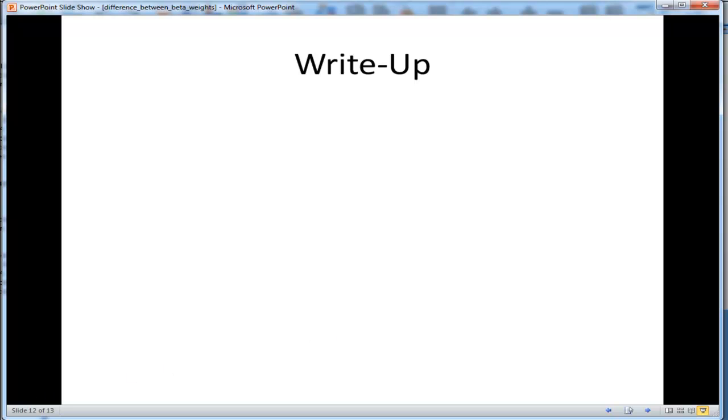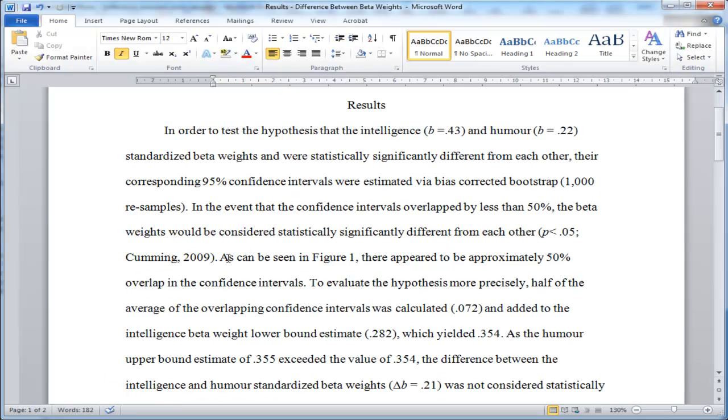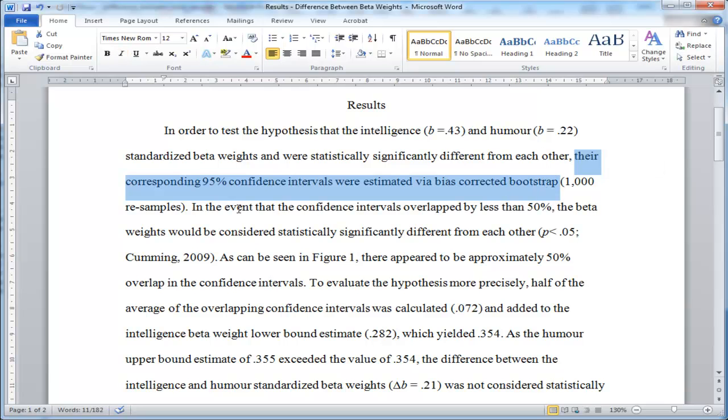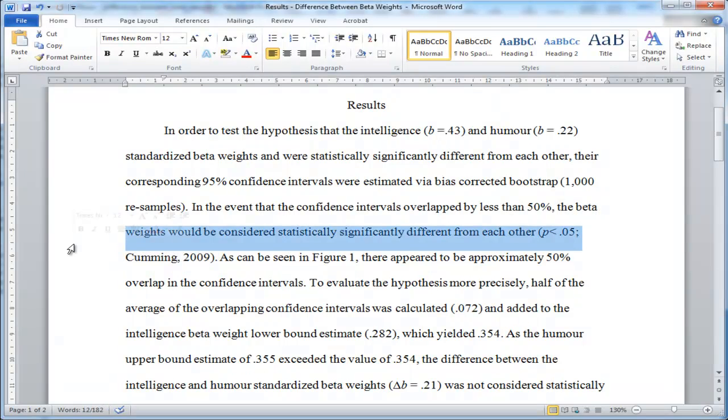Writing these results up, I would say, in order to test the hypothesis that the intelligence and humor standardized beta weights were statistically significantly different from each other, their corresponding confidence intervals were estimated by the bias-corrected bootstrap, of which I had 1,000 re-samples. In the event that the confidence intervals overlap by less than 50%, the beta weights would be considered statistically significantly different from each other. Here I'm citing the Cumming paper, who showed that 50% overlap seems to be about right for a number of different statistics.